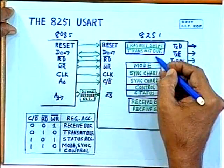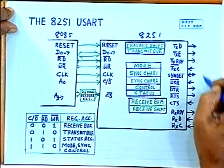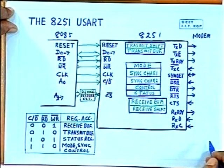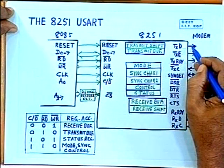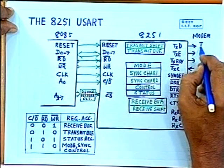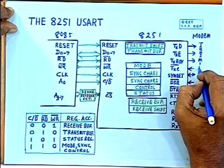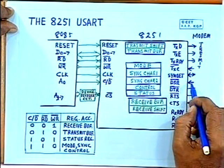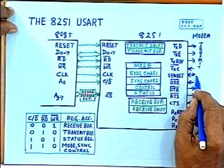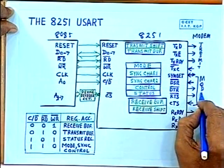The various registers are shown in the diagram. On the modem side: TXD, TXC, and TXREDI are used for transmit control. DSR, DTR, RTS, and CTS are used for modem control.